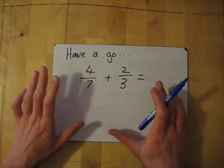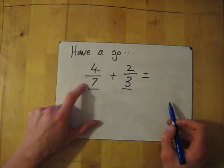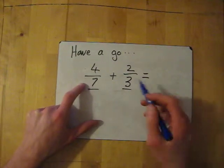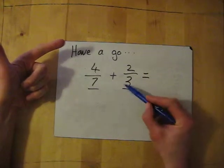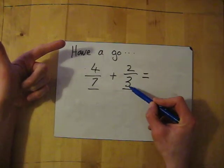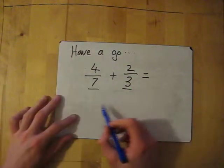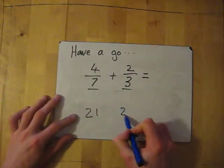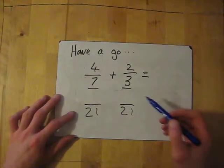Okay, so common multiple between 7 and 3. We need this denominator to be the same. So I'm going to concentrate on the bigger numbers. So think of 7 times tables. So 7, doesn't work for 3. 14, doesn't work for 3. 21, does, it works for 3. So we're going to change the common multiple as 21. So we're going to change them both into 21. So fractions out of 21.